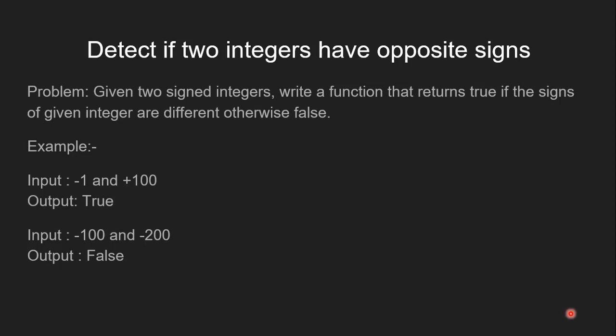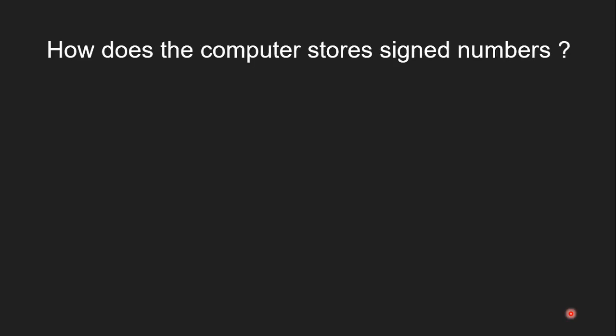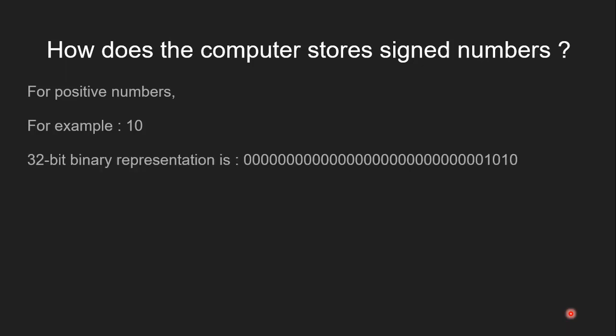Before we go ahead and see how to solve the problem, let's understand some basics. How does the computer store signed numbers? For positive numbers, the technique is quite straightforward — a simple binary representation of the number is stored in memory. For example, the 32-bit binary representation of 10 is stored using 32 bits of memory.